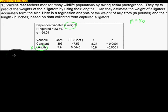Wildlife researchers monitor many wildlife populations by taking aerial photographs. They try to predict the weight of the alligators by using their lengths. Once again, it's pretty hard to get an alligator on a scale. So they want to estimate the weight of alligators accurately from the air. They're going to get the length from looking at the air and then try to estimate their weight. Here's a regression analysis of the weight of alligators in pounds and their length in inches based on data collected from captured alligators.